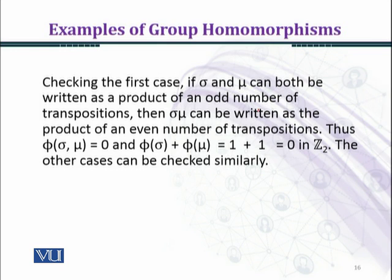Sigma and mu are odd. This means they can be written as odd number of transpositions.